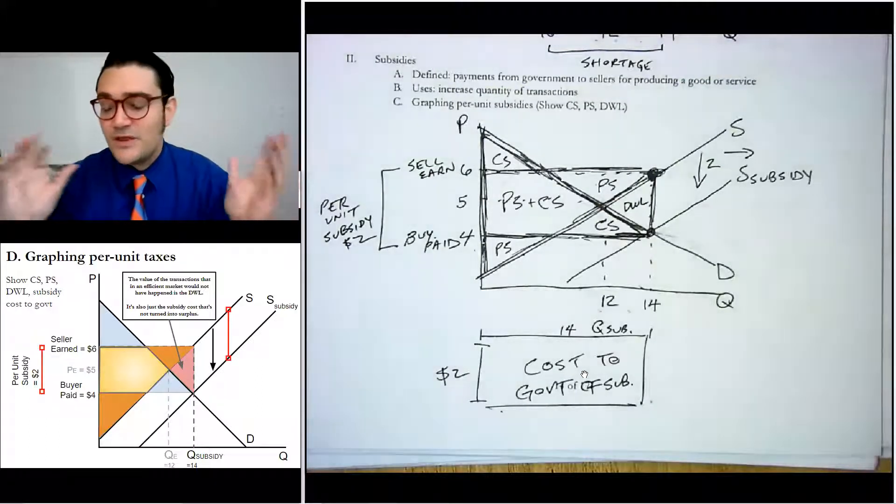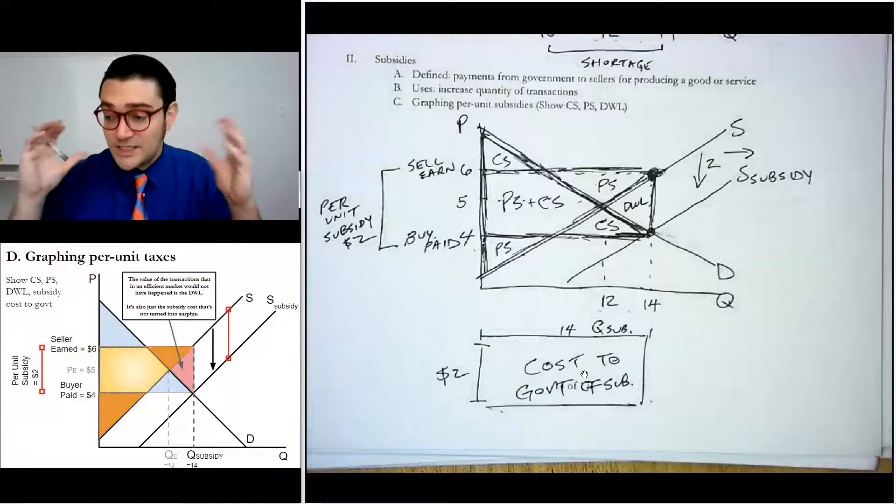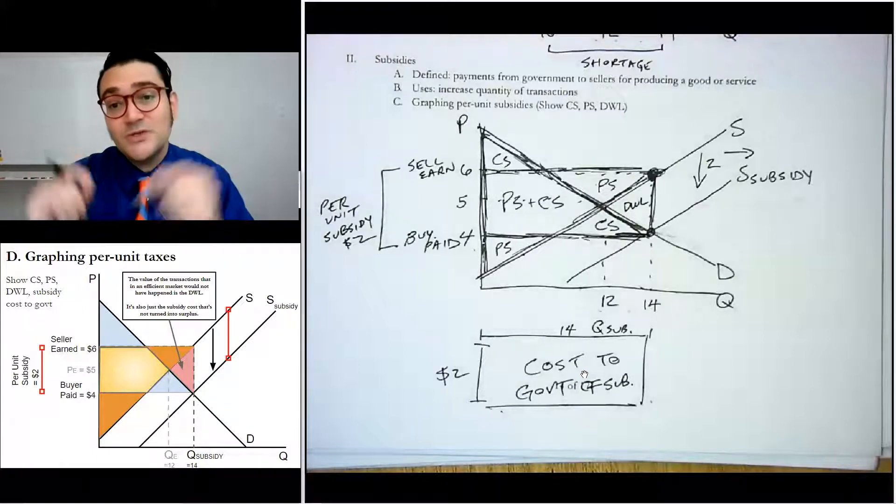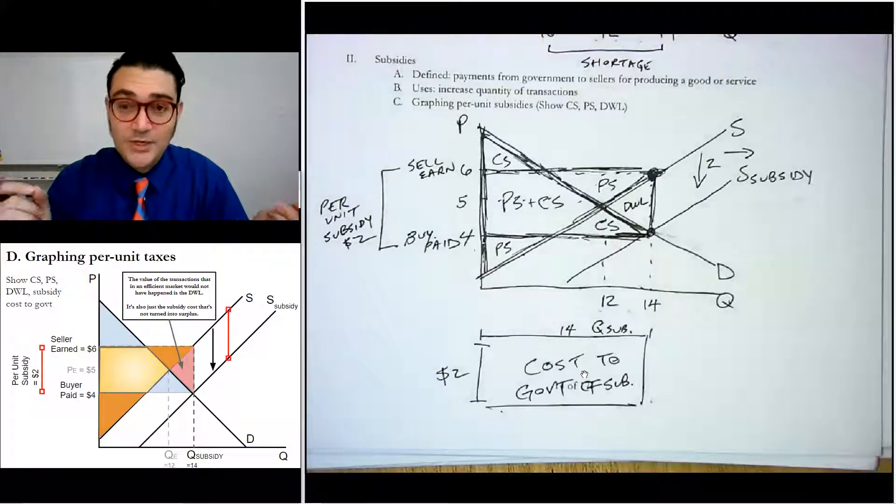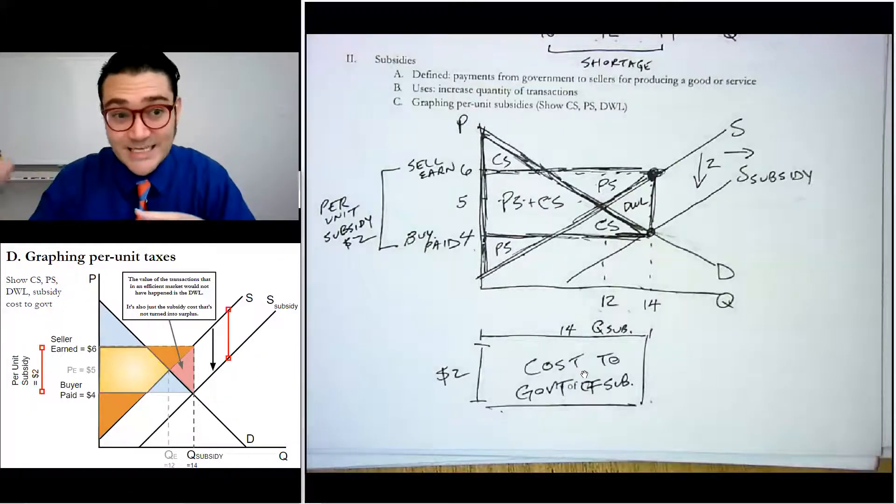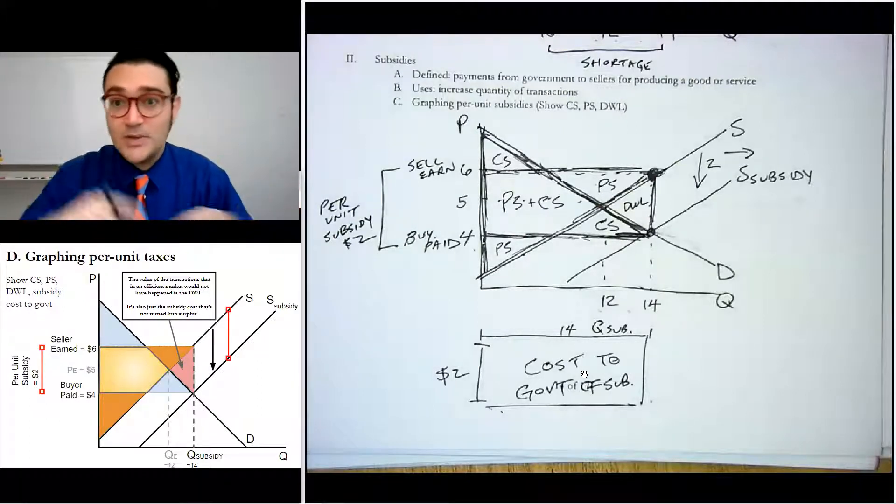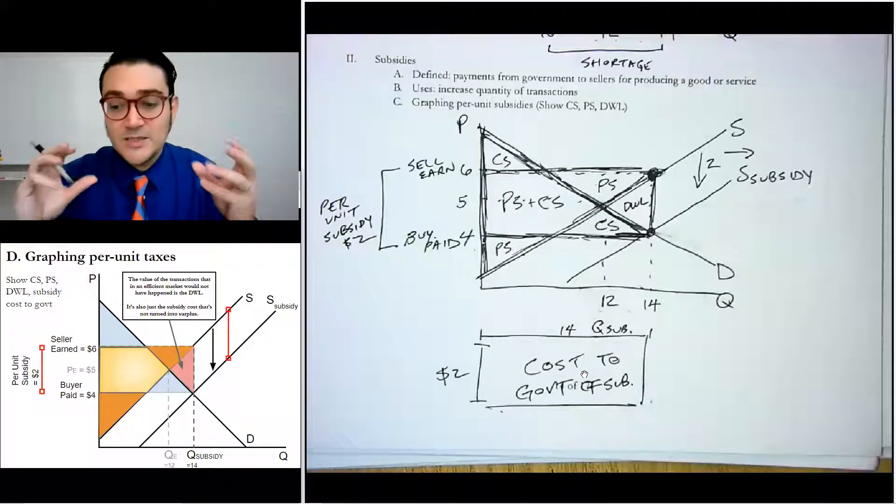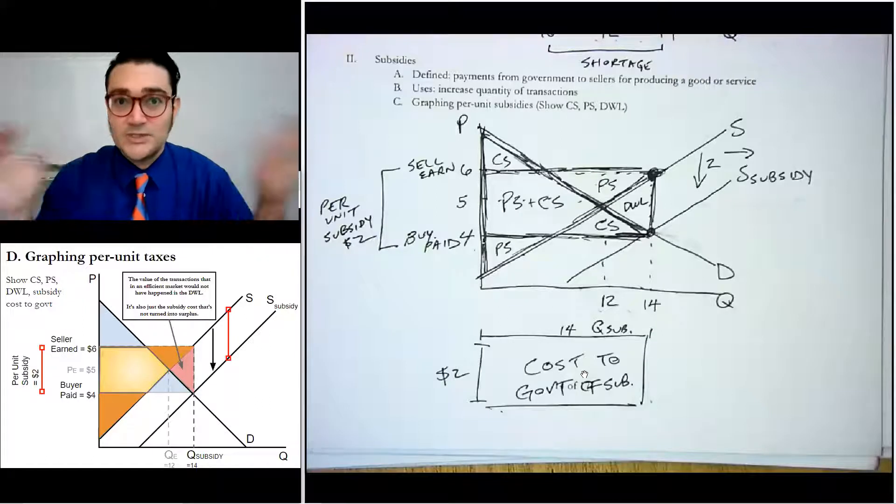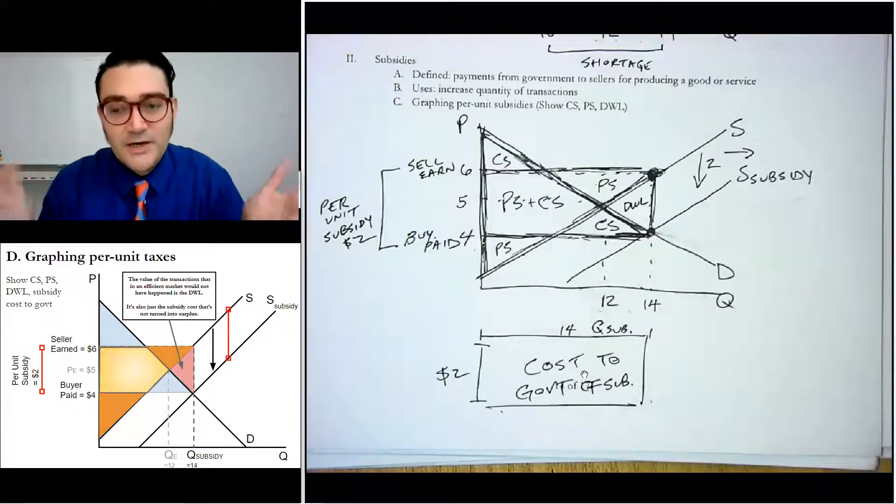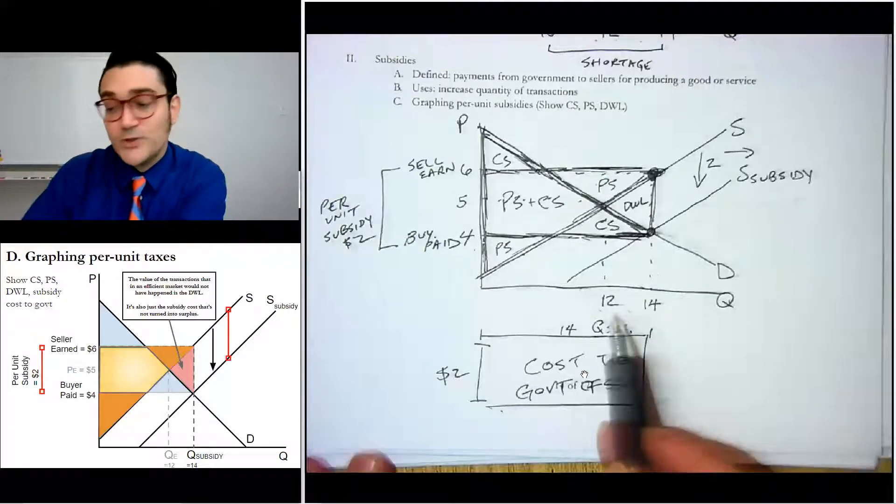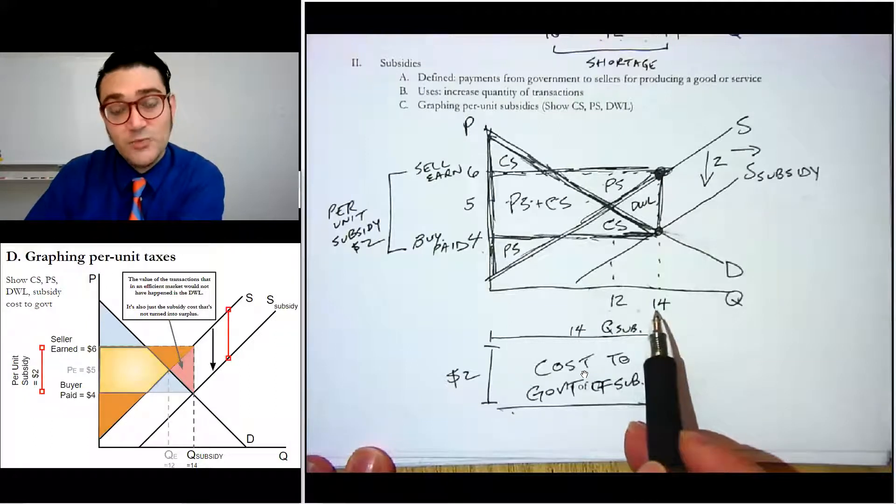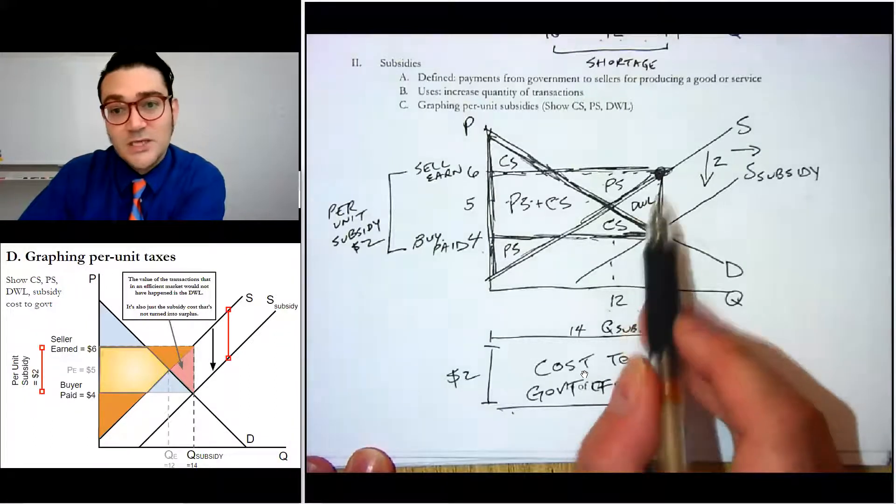Now, anything that we think about in this context might be helpful to just think inefficiency is the value of the transactions that should not have happened that did or that did not happen that should have. And so I know that that sounds like a bunch of word salad, but it's the idea of the value of the transactions that weren't supposed to be there. And in this case, we had two more transactions occur than what we did previously.